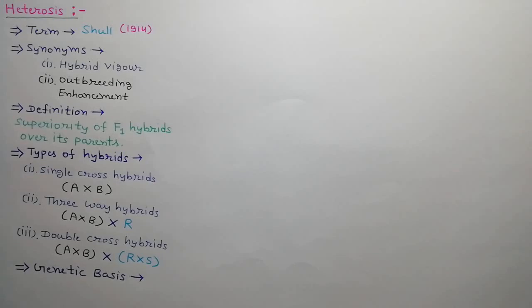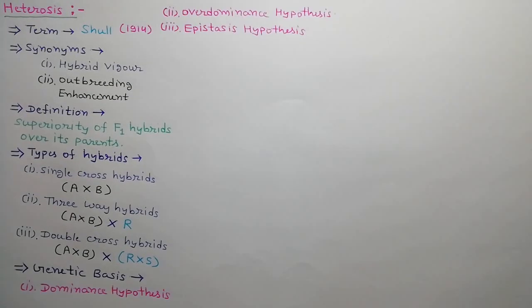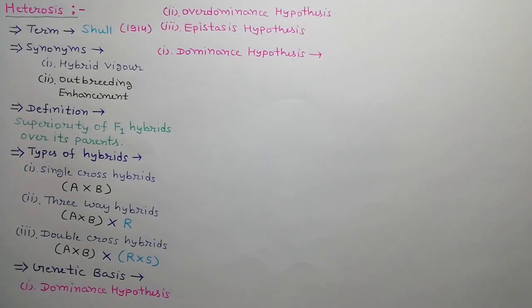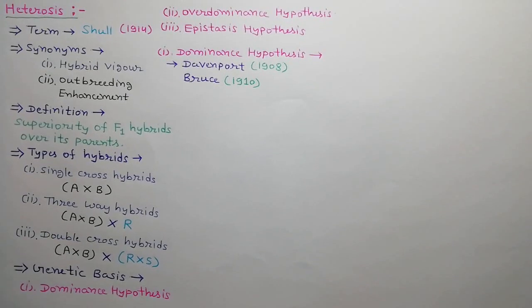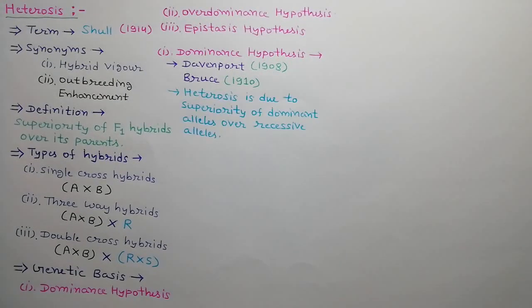Genetically, heterosis can be explained by three hypotheses: the Dominance Hypothesis, Over-dominance Hypothesis, and Epistasis Hypothesis. The first is the Dominance Hypothesis, which was given by Davenport in 1908 and supported by Bruce in 1910. According to this hypothesis, heterosis is developed due to the superiority of dominant alleles over recessive alleles.